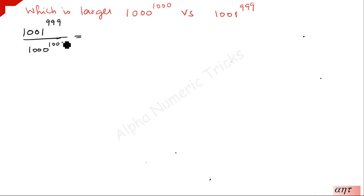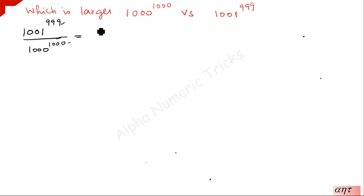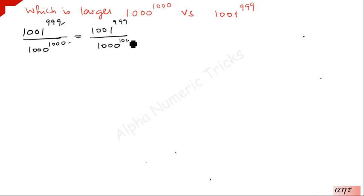Here we have to make both the powers the same. For that we just multiply this number by 1001, so the power becomes 1000. But without changing the value, we have to divide by 1001 also. So we write this term as 1001 to the power 999 divided by 1000 to the power 1000.